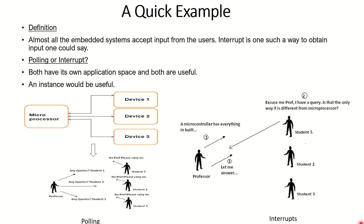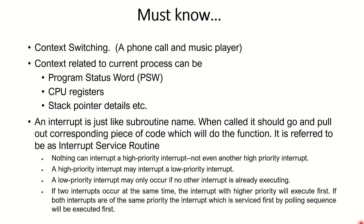Where do we go for polling and where for interrupts? Modern cars have many safety features — the centralized microprocessor keeps checking all attached components if they are fine, and that is polling. But the airbag is a simple example of interrupt: when there is an accident, that's an interrupt and immediately the airbag comes out.